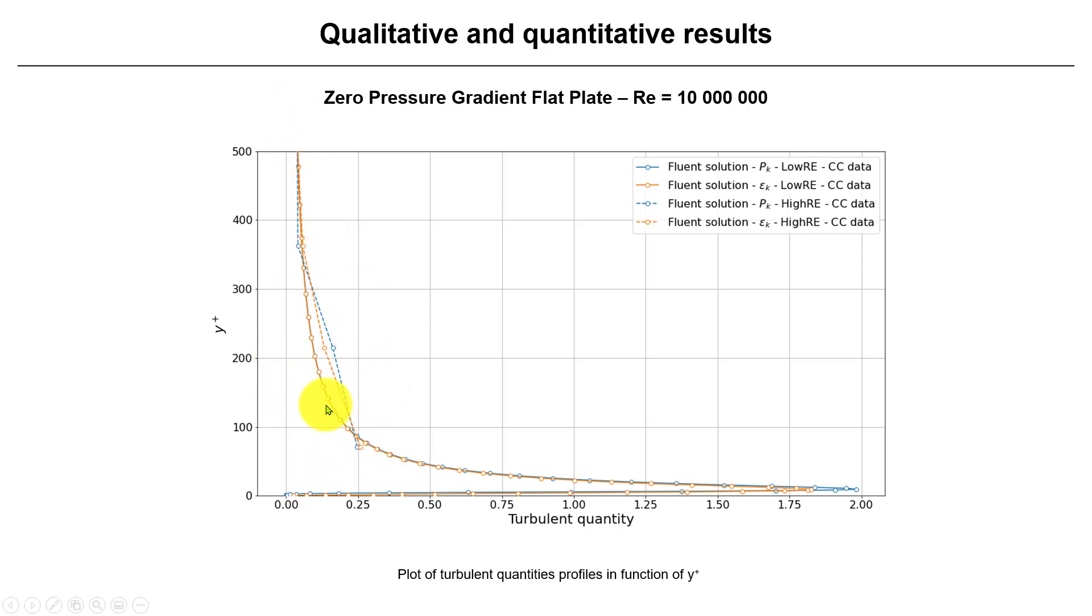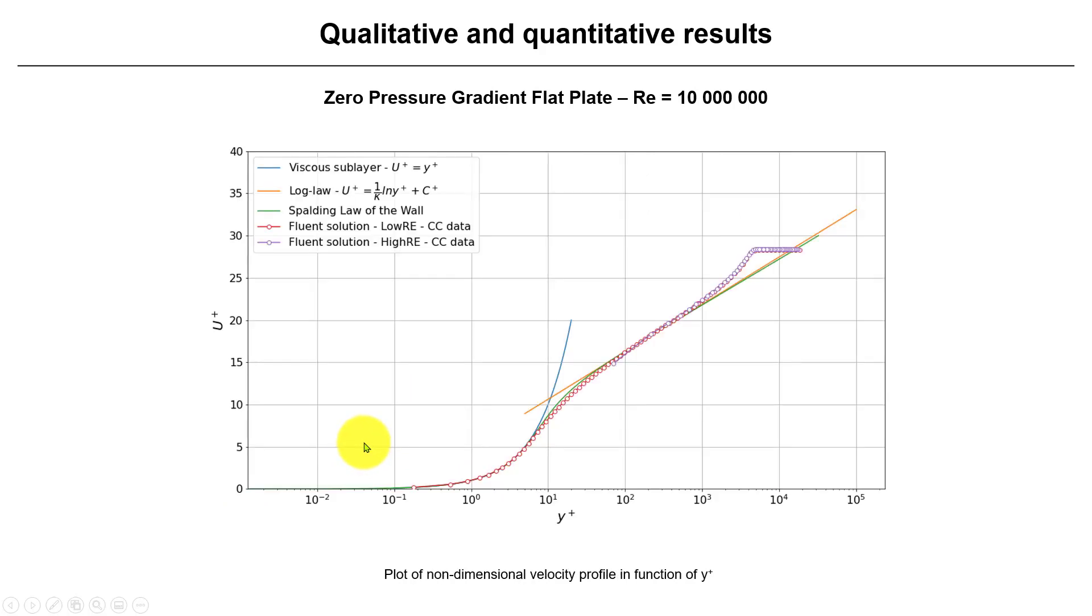By putting a wall function, you are saving all these cells that you need to put here, but also you have good accuracy. These wall functions are very reliable. However, try to avoid them if you have separation. If you have massive separations, they are not very reliable. Be careful.